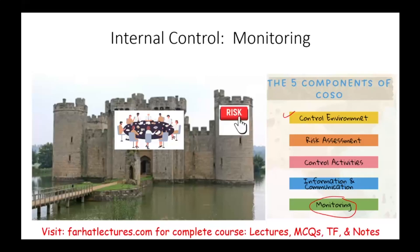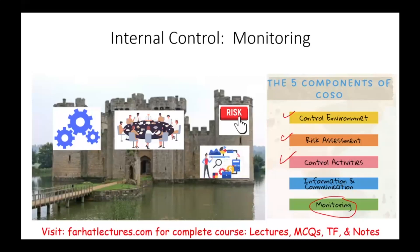We also reviewed risk assessment — how the company assesses its own risk in terms of monitoring risk. Third, control activities: what activities, steps, policies, and procedures the company undertakes to make sure internal controls are working properly. In the prior session we looked at information and communication, and in this session we will discuss the last component, which is monitoring.